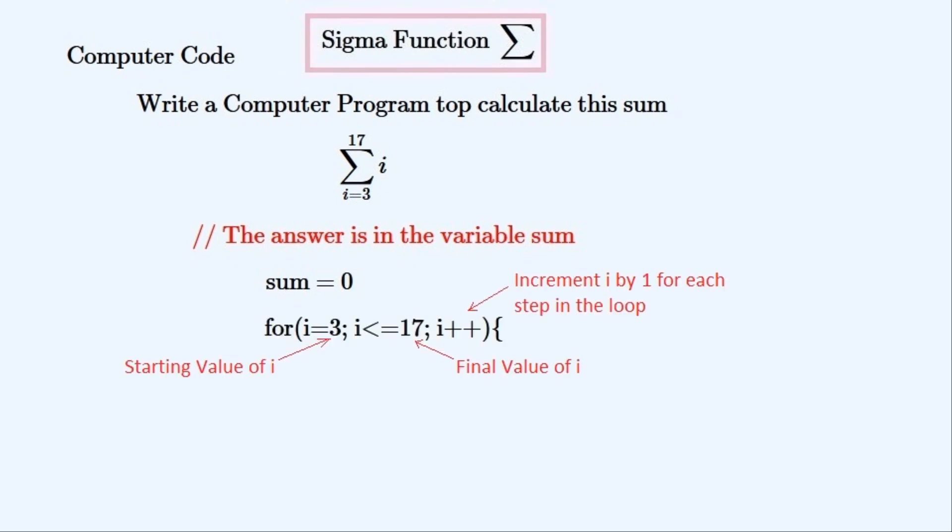It's in the form used in C, Java, JavaScript and many other computer languages. The for loop varies in many computer languages but its structure is the same. The minimum and initial value of the variable i is set at the beginning of the brackets. The maximum and final value of i is set in the middle and the step size of i is set at the end, being set to increment by one for each step of the loop.